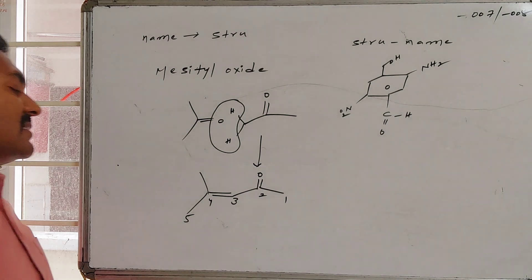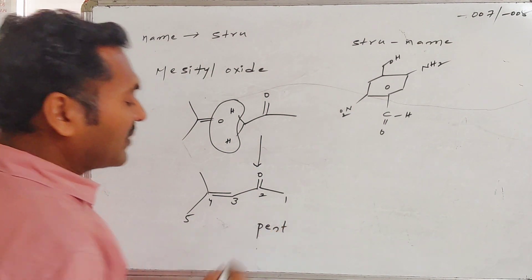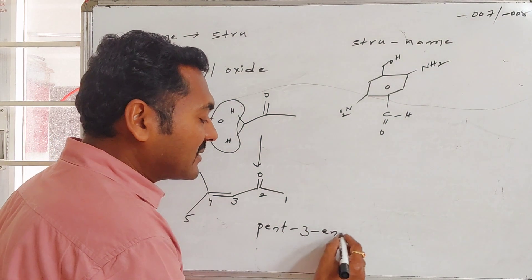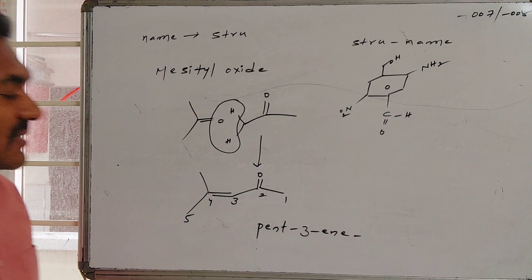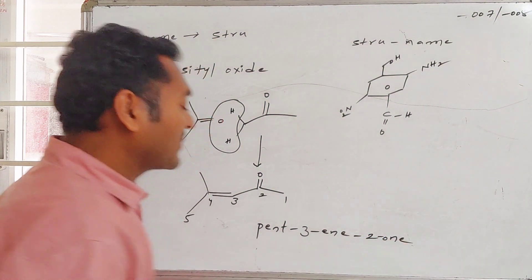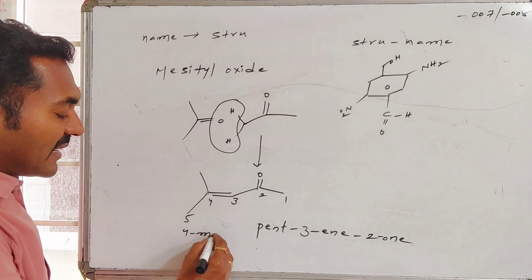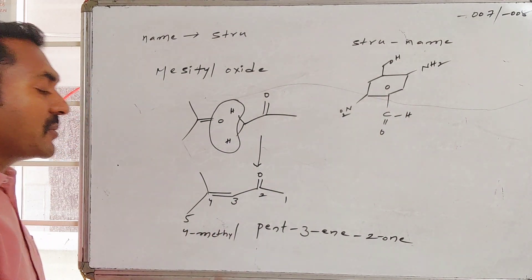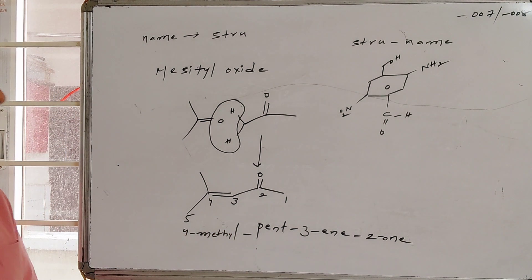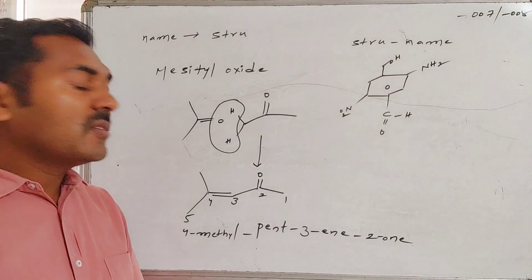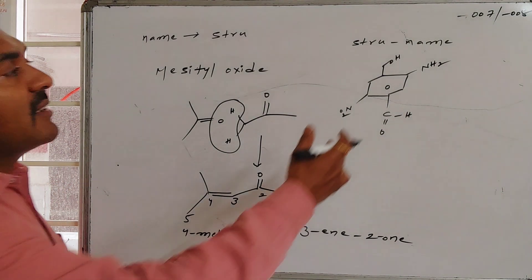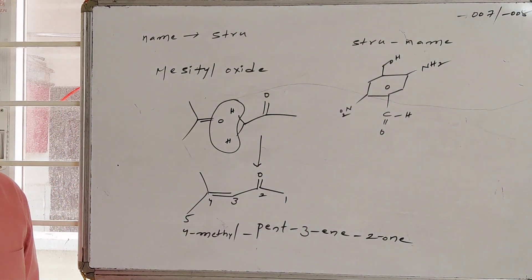The exact IUPAC name for mesityl oxide can be derived as follows: there are five carbons in the longest chain, so it is a pent system. There is a double bond at the third position, making it pent-3-en. At the second position there is a keto functional group, giving pent-3-en-2-one. At the fourth position there is a methyl substituent as a prefix. Therefore, the IUPAC name of mesityl oxide is 4-methyl-pent-3-en-2-one.